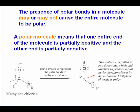The presence of a polar bond in a molecule may or may not cause the entire molecule to be polar. Previously we talked about bonds being polar. Now we're going to talk about an entire molecule being polar. A polar molecule means that one entire end of the molecule is partially positive and the other end is partially negative.